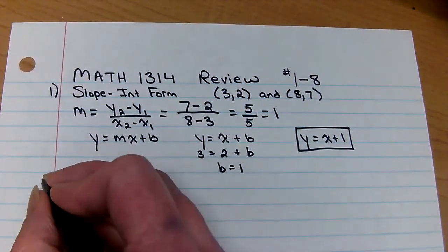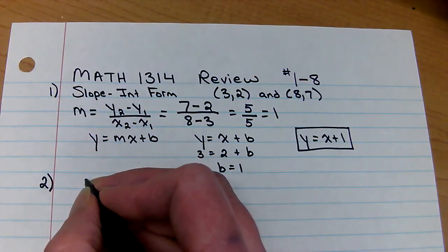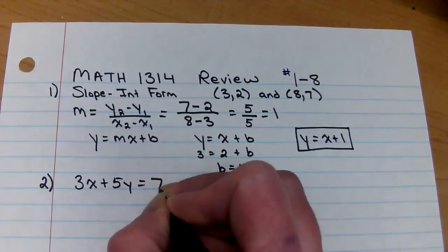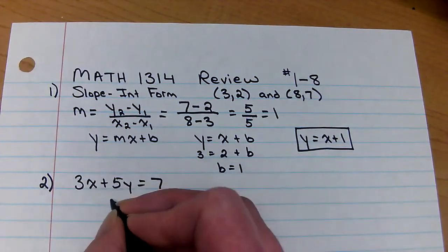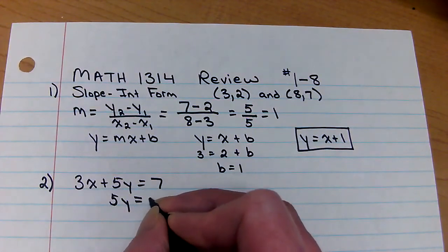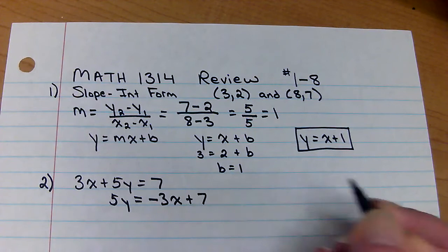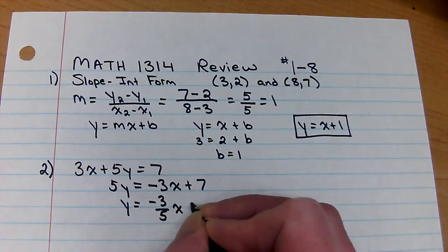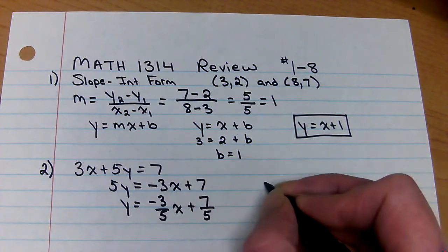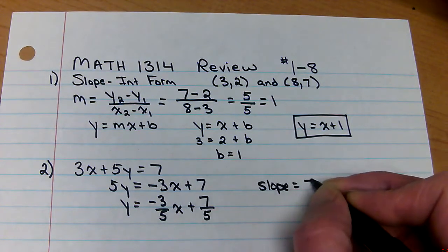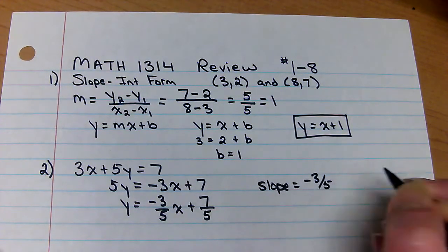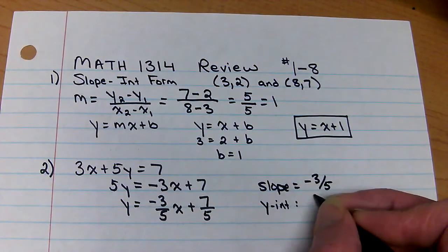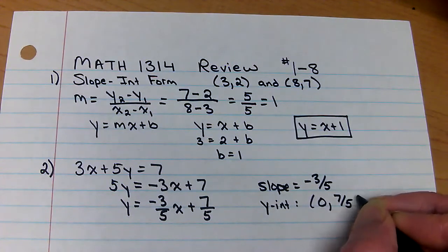Now let's go to number two. Number two says give the slope and y-intercept of three x plus five y equals seven. So I would solve for y. So my slope would be the coefficient of x, my m. And my y-intercept would be the point zero comma seven fifths.